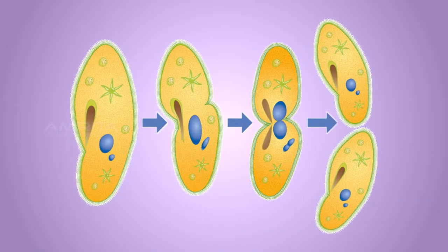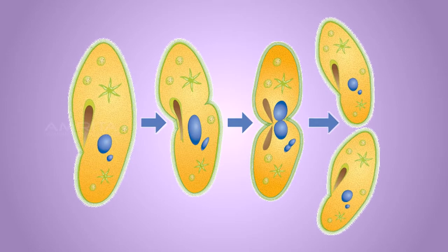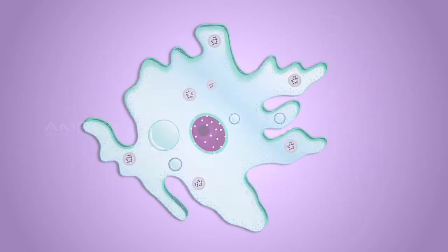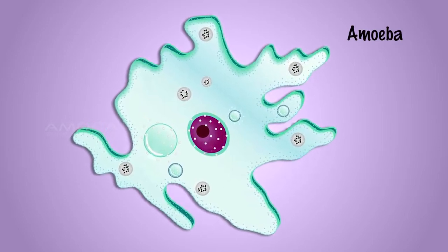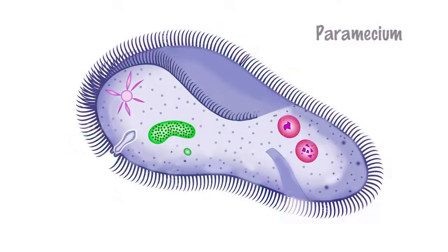In binary fission, two organisms are formed from a single parent. This mode of asexual reproduction is found in unicellular organisms such as amoeba and paramecium.